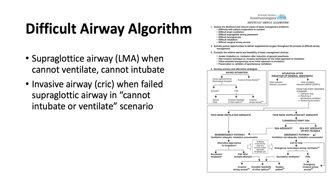The difficult airway algorithm from the ASA: if you cannot ventilate and cannot intubate, place a supraglottic airway — usually a laryngeal mask airway. This converts a cannot-ventilate situation to a can-ventilate situation, giving time for fiberoptic intubation or other approaches. However, if the supraglottic airway fails, saturations drop, and you still cannot ventilate or intubate, an invasive airway — cricothyrotomy or jet ventilation — is indicated.